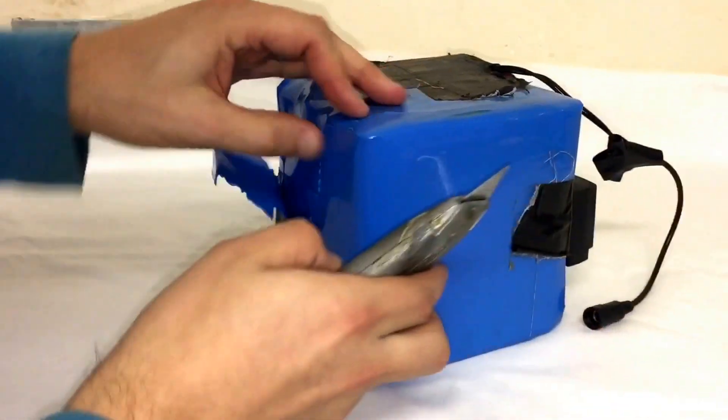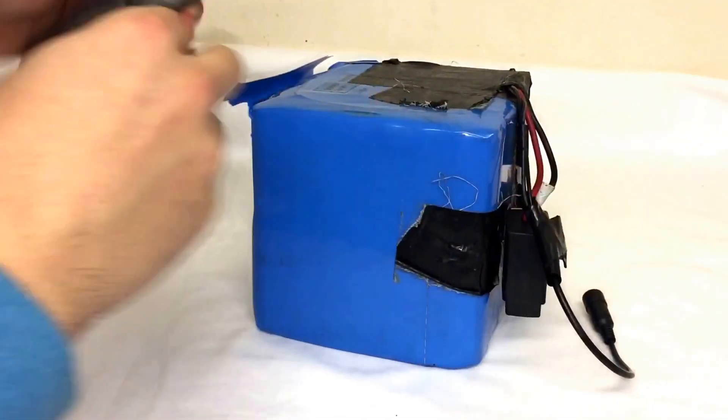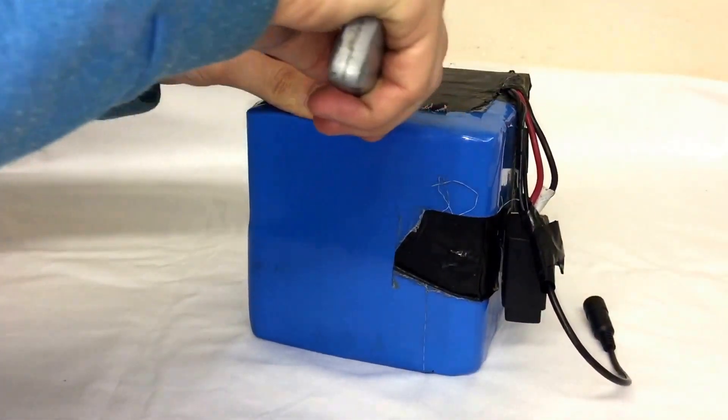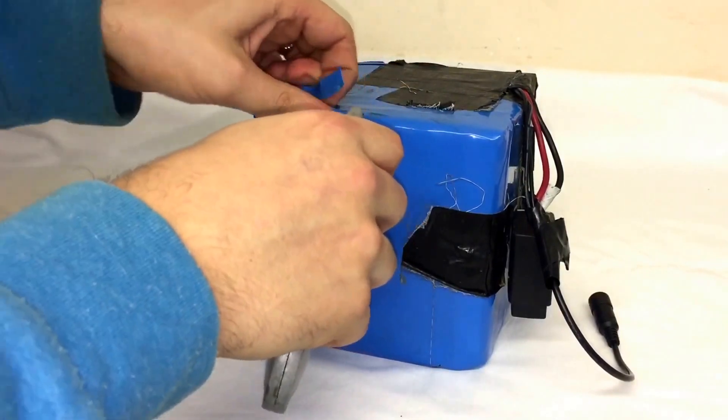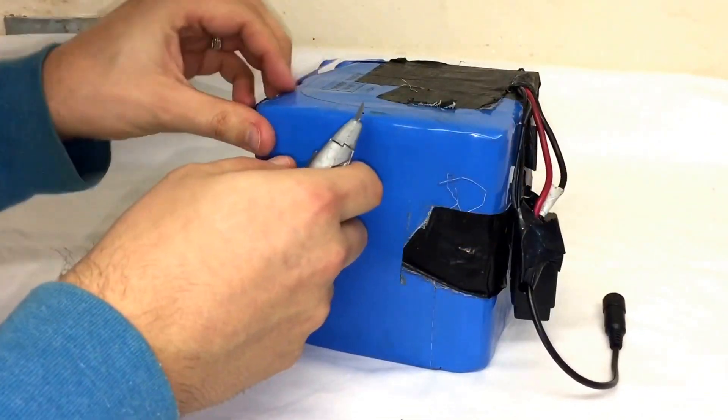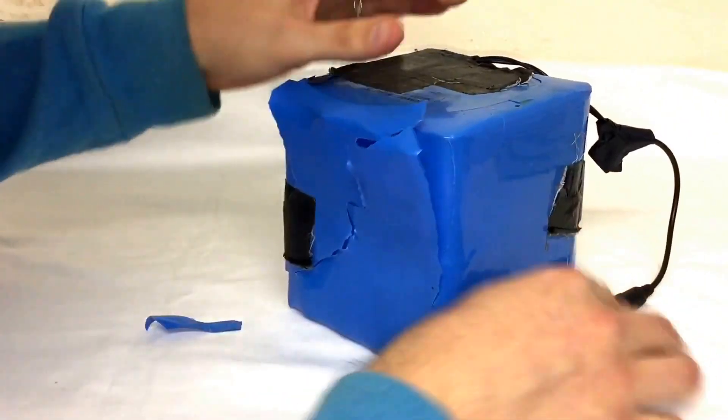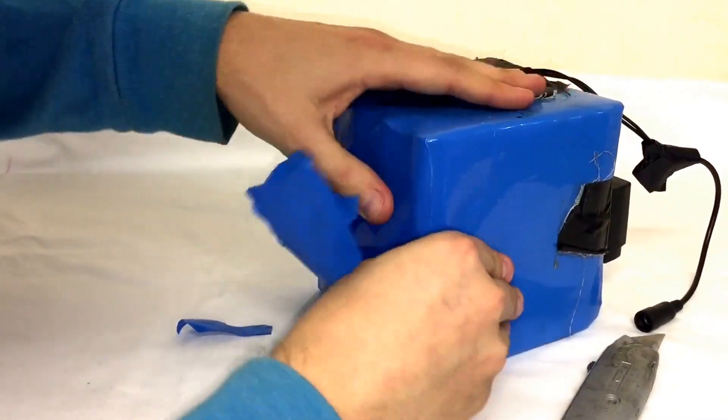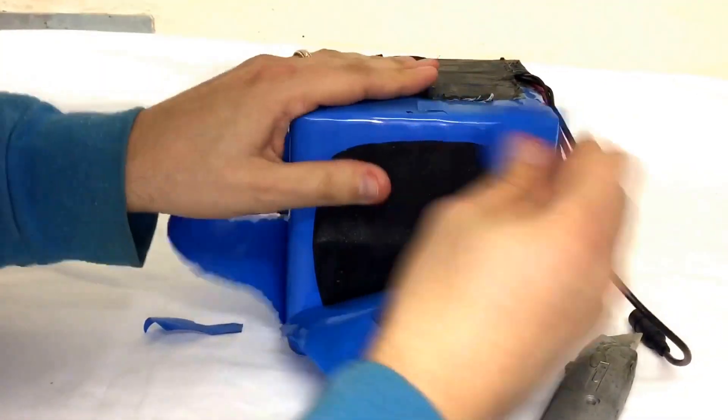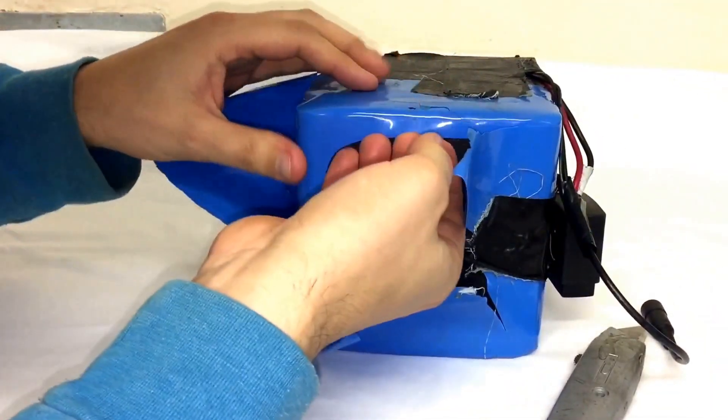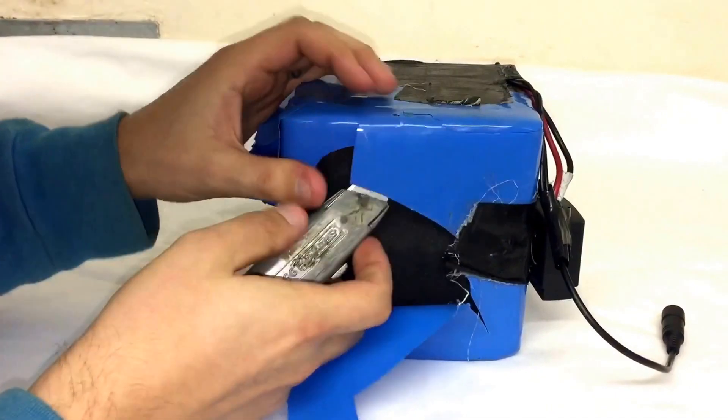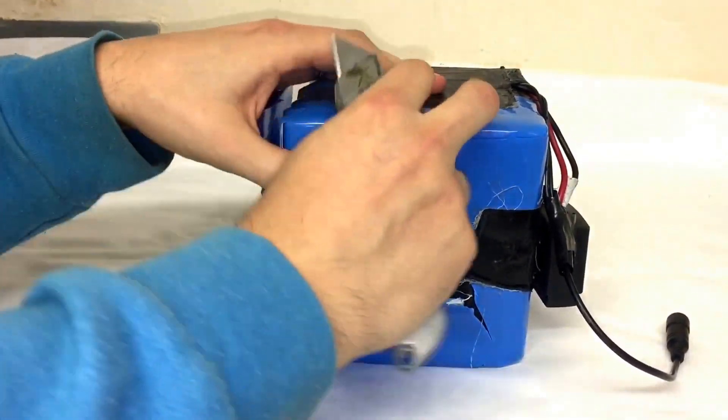It's quite tough as well, actually, not the easiest thing to take off. So it looks like it's got two layers of this outer bit here. Let me peel this one off and see what we find.